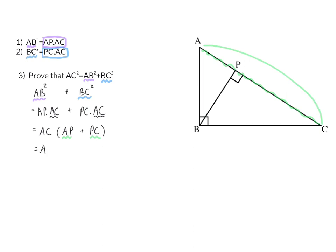So in my next step, I'm going to change that bracket to AC, and then I have AC times AC, which is AC squared. And that means I've now proven the theorem of Pythagoras, because I've proven that AC squared is the same as AB squared plus BC squared.